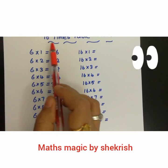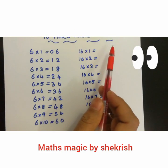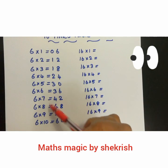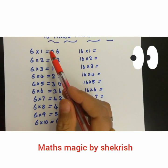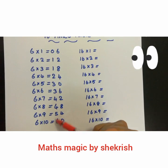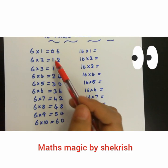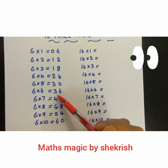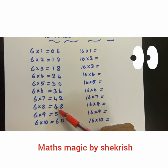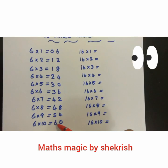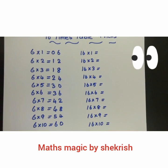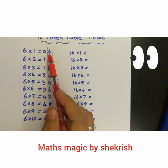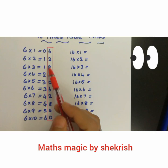Now for the 16 times table, we need the 6 times table. We already have the 6 times table here: 6, 12, 18, 24, 30, 36, 42, 48, 54, and 60. Now we will take all the unit place digits.